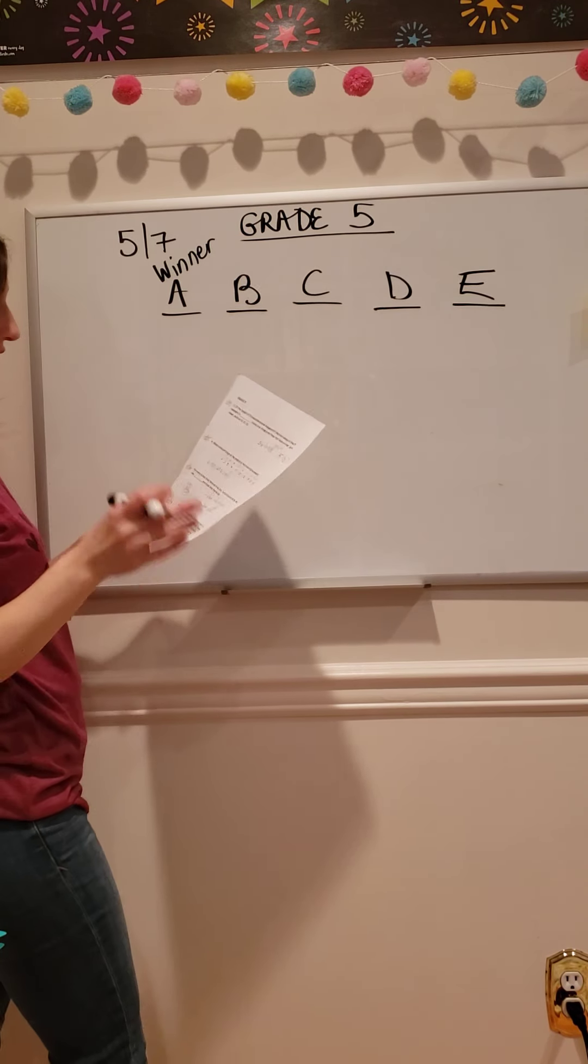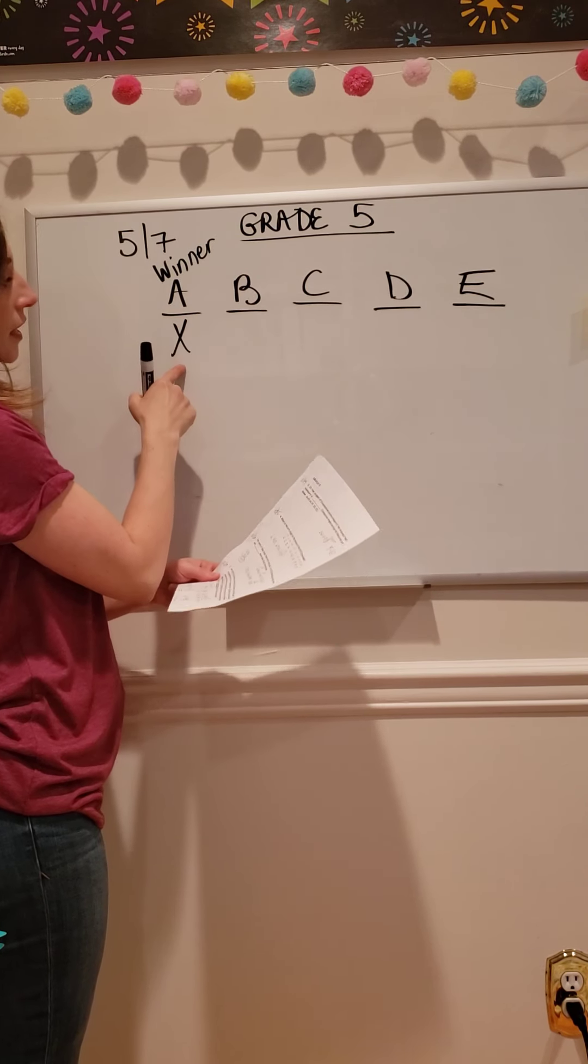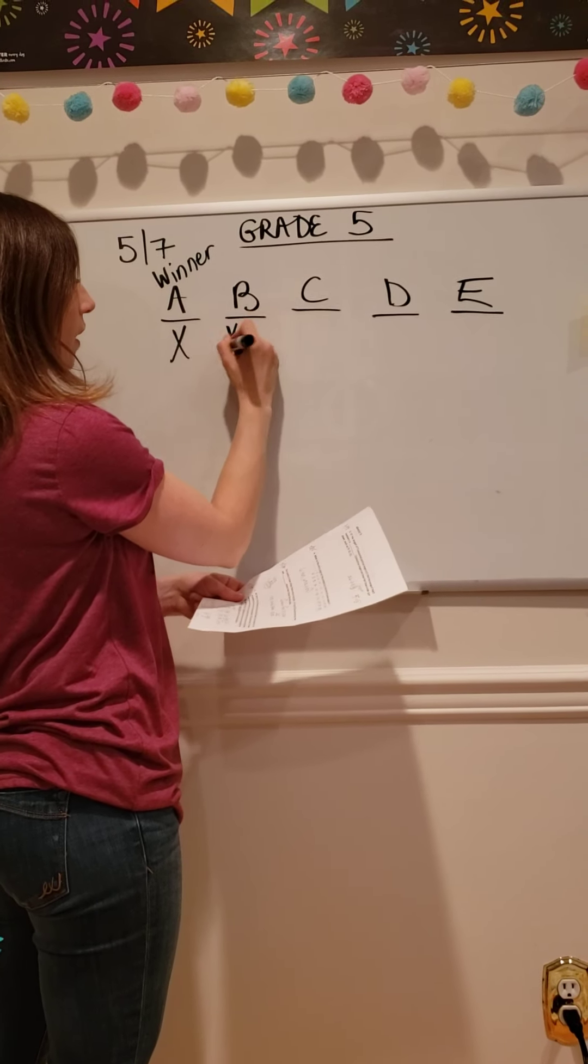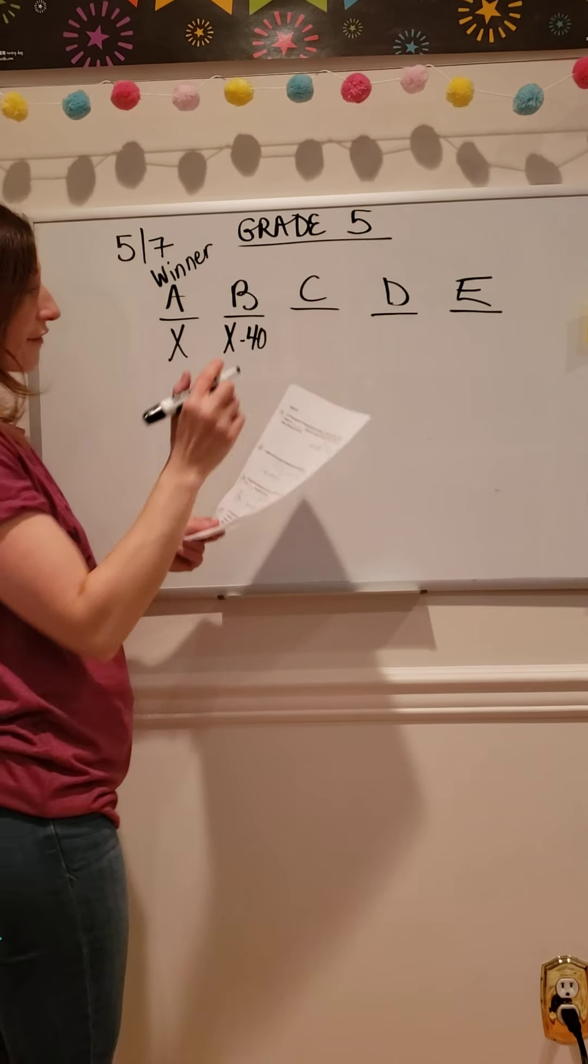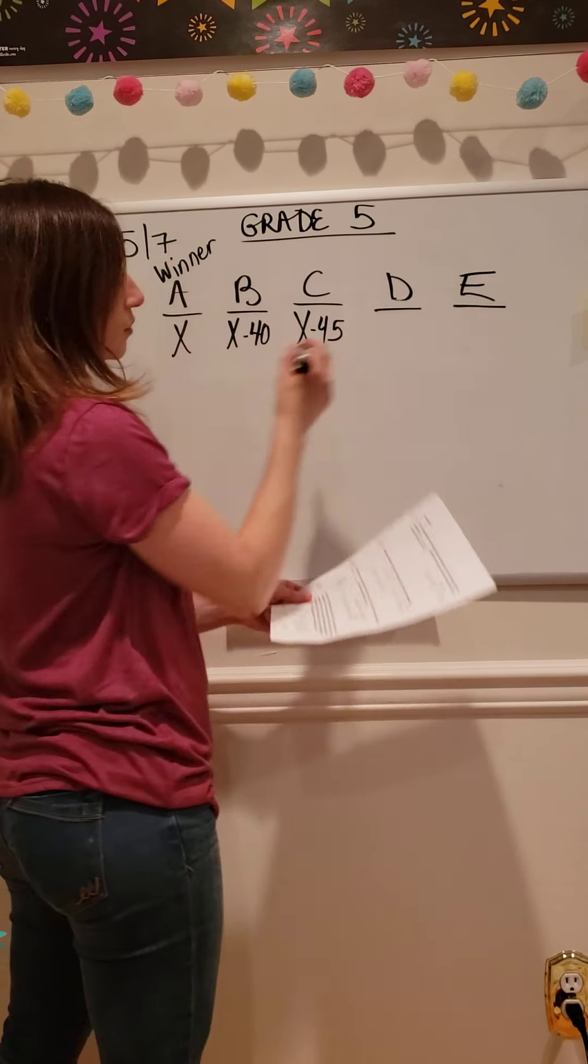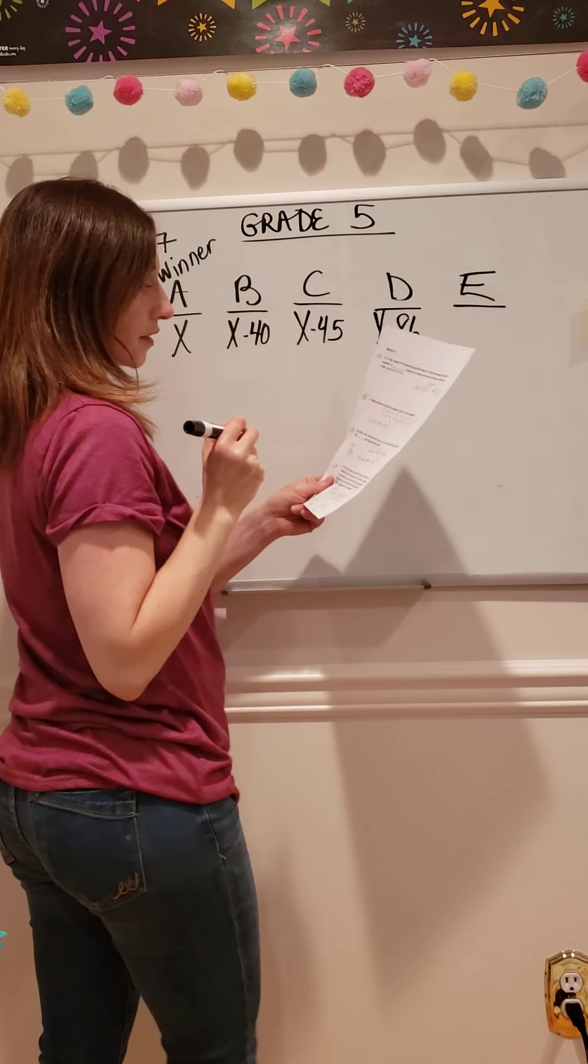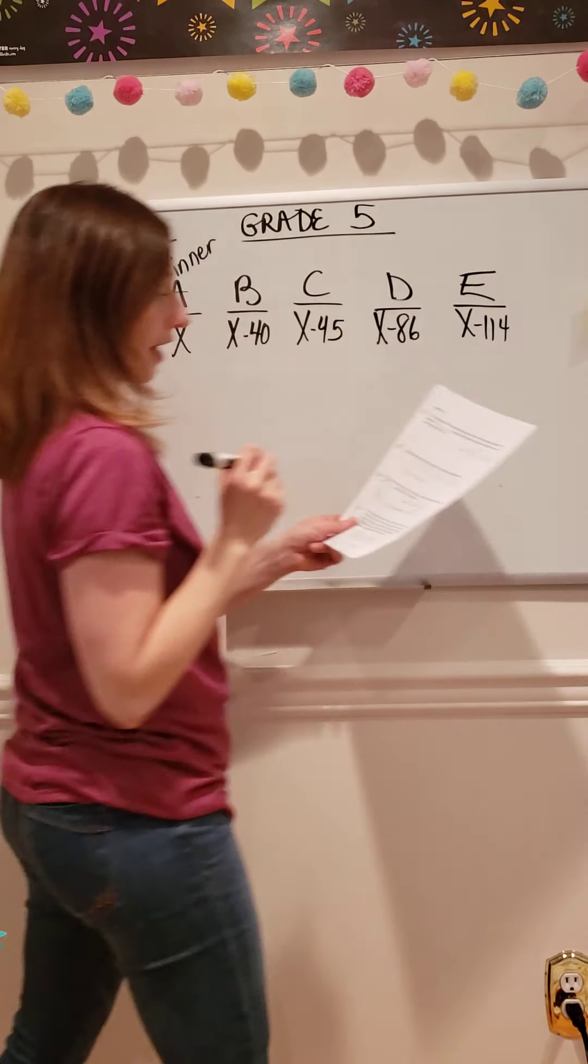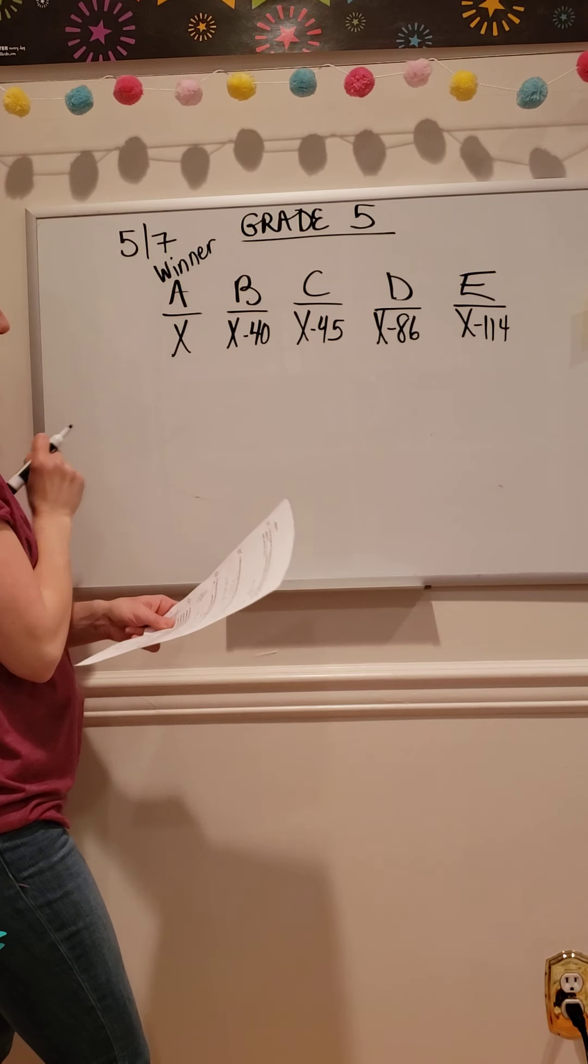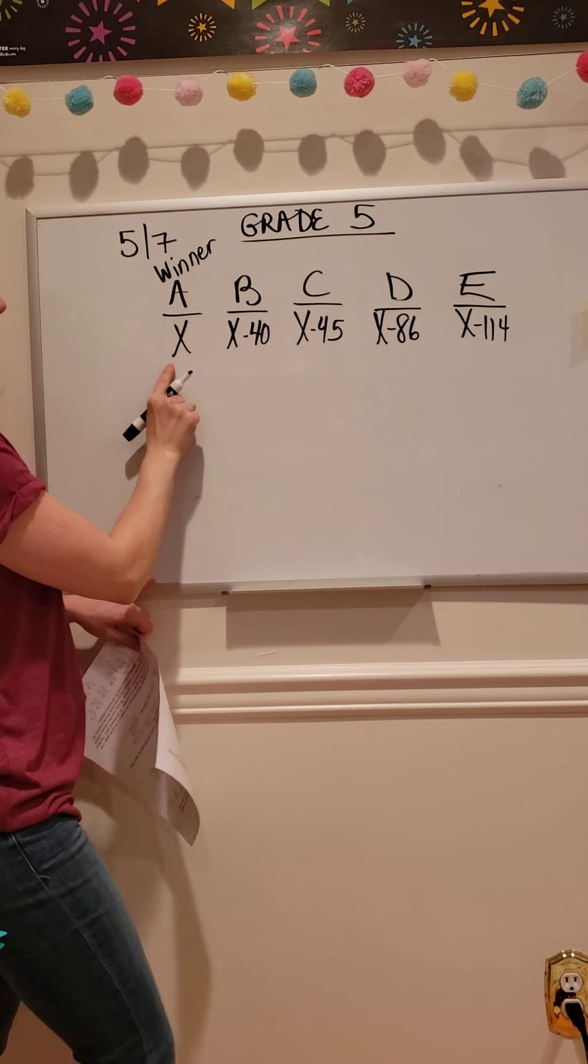It says the winner received 40 more votes than one candidate. So we don't know how many votes that is, but we know they got 40 more than B. So I'm going to take away 40. Then it says 45 more votes than the second candidate, 86 more votes than a third candidate, and 114 more votes than the fifth candidate. How many students voted for the winning candidate? That's what we need to find out. That's why we represented it as an X, because that's the mystery number.